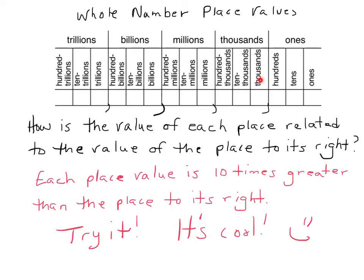One-thousands means it goes one through nine thousand. Then we start getting to the ten thousands: ten, twenty, thirty, forty, fifty, sixty, seventy, eighty, ninety thousands. Then we get into the hundred thousands. That's the pattern that works here. When we start getting to these big numbers, you just don't want to forget that.